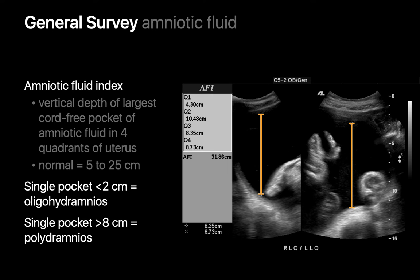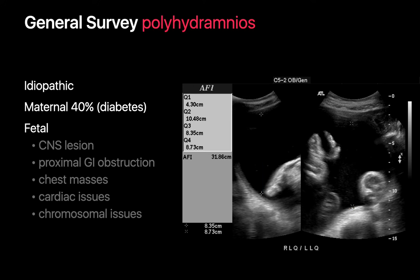In this case, the AFI is 31.86 and the deepest pocket is 10.48 centimeters, indicating polyhydramnios. Polyhydramnios is often idiopathic; however, around 40% of the time the cause will be maternal — such as maternal diabetes, renal, or cardiac problems. Fetal anomalies can be the culprit some of the time as well, and a few examples are illustrated on this slide.